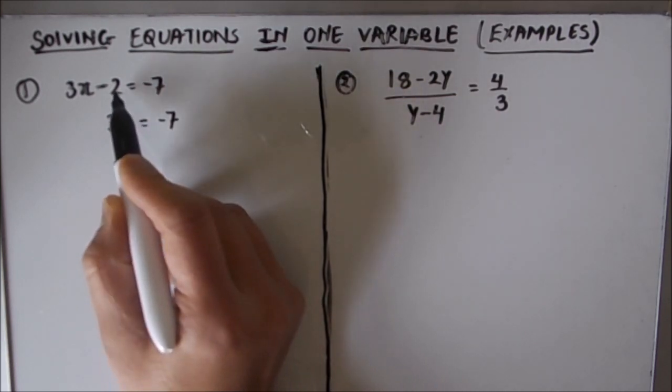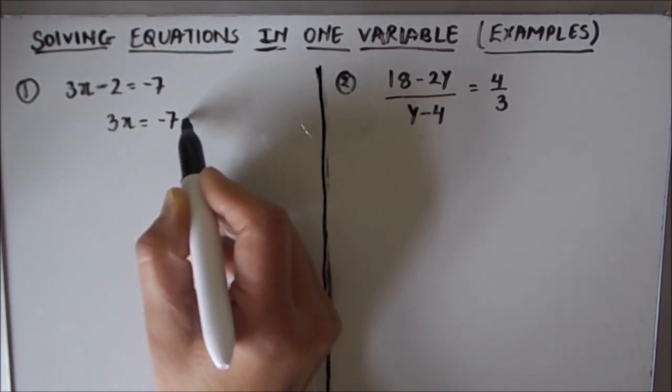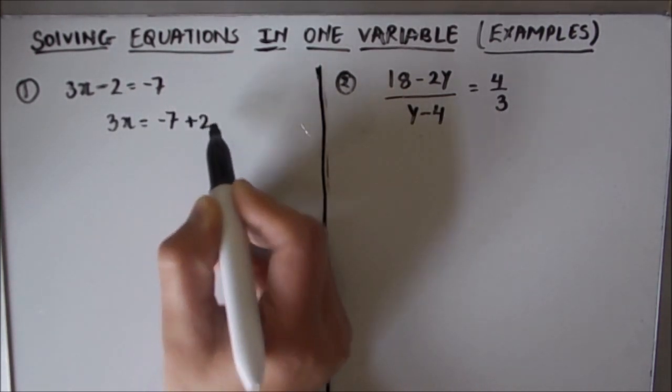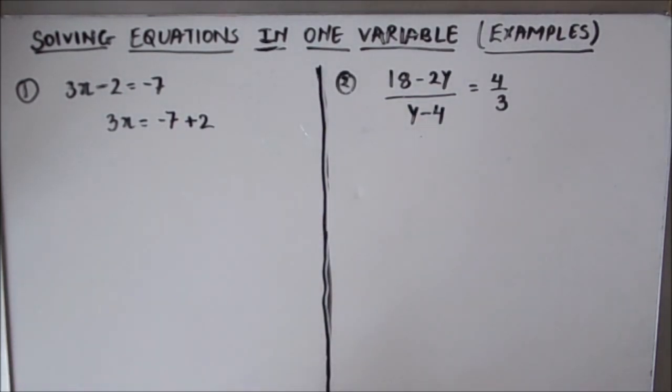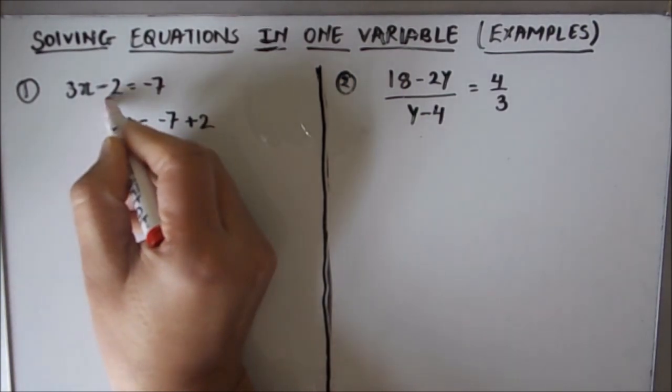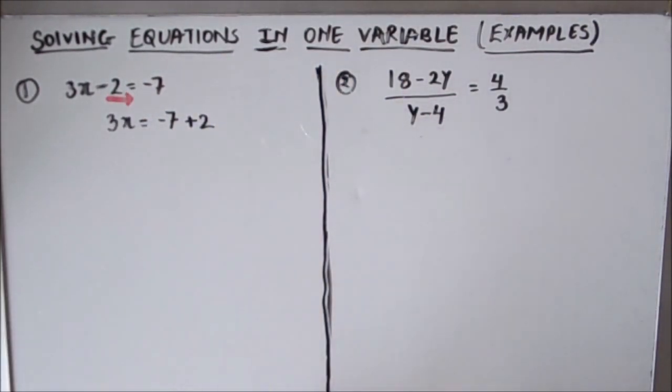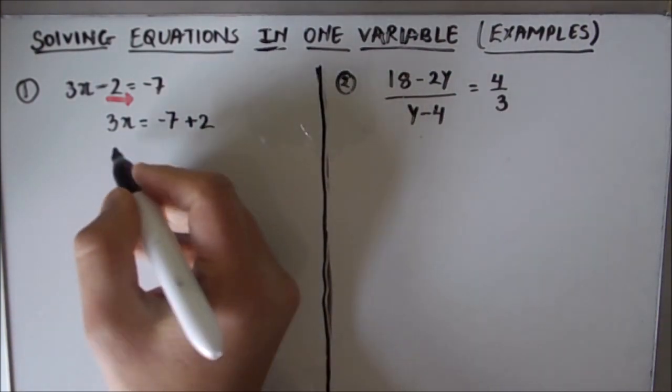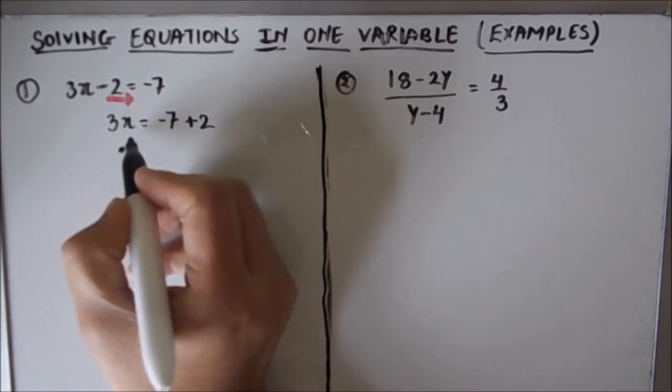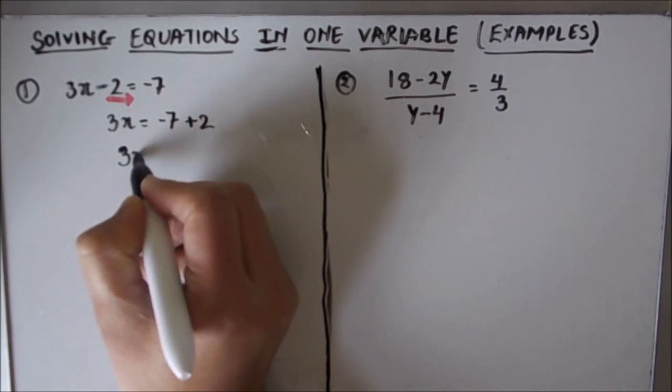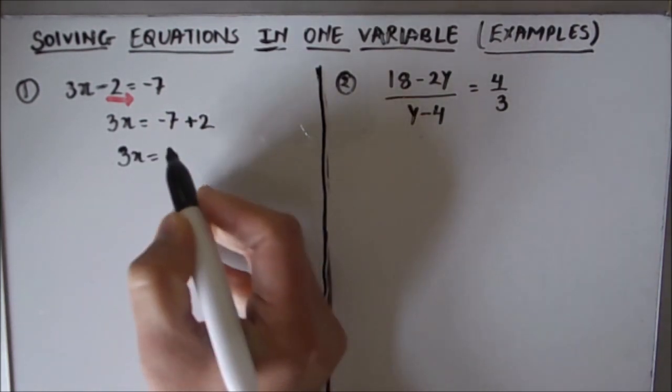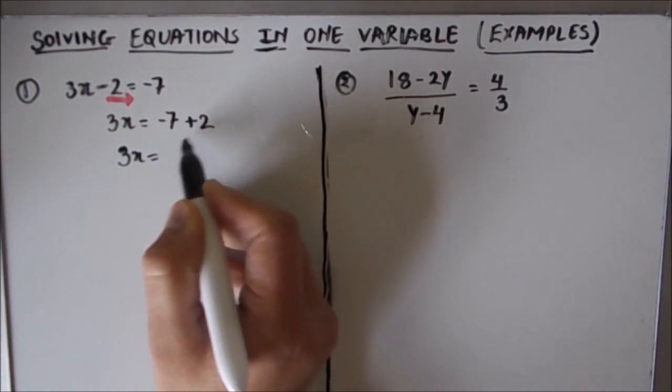Here the constant is minus 2, and if we transpose the minus 2 from one side to the other, the sign of the constant changes. So here minus 2 will become plus 2 on this side. So the equation is now 3x equals minus 7 plus 2.